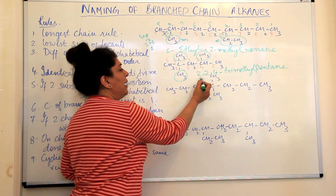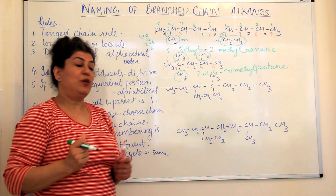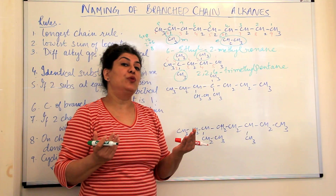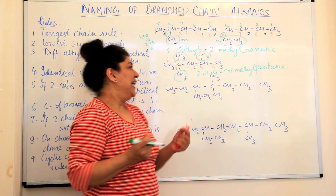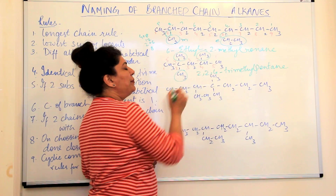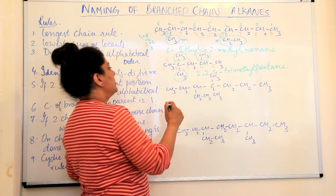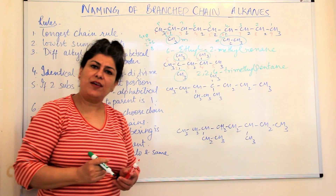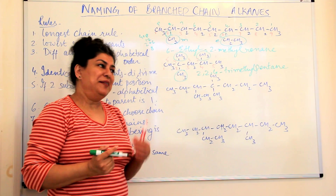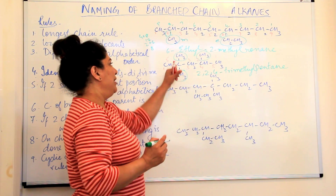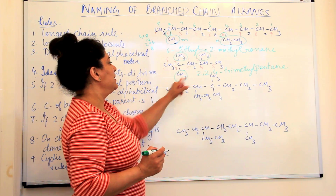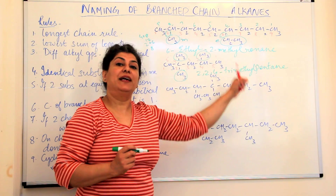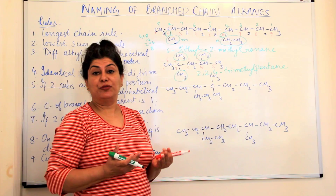Keep in mind that commas must separate the locant numbers — 2, 2, 4 — because without commas it could be misread as 224. Each methyl group needs its own locant because if one methyl were at the third carbon instead of the second, it would be a different compound — that compound would be named 2,3,4-trimethylpentane.